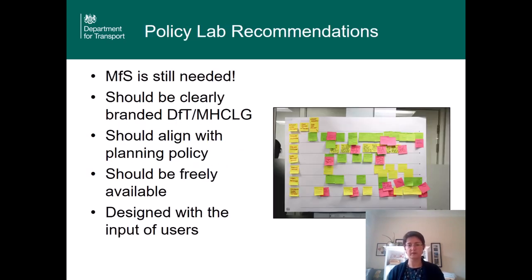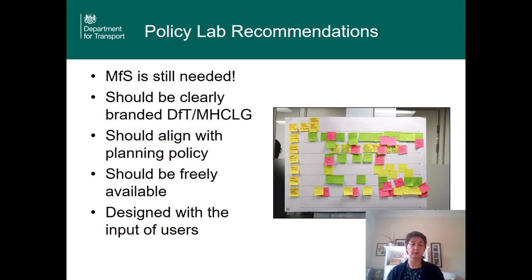After the stakeholder event, the Policy Lab collated all the evidence collected and produced a long list of recommendations which we received last summer. The primary recommendation was that yes, we still need MFS. There were also recommendations around content, who it should be aimed at, and what it should look like. Major recommendations included: it should be clearly branded DfT/CLG or possibly HM Government; it should align with planning policy; it should be designed with input from users; and it should be freely available. Views ranged widely — some said online only, some said it still had to be hard copy, some said more prescriptive — but there was overall agreement it was needed, should be updated regularly, and freely available to all.